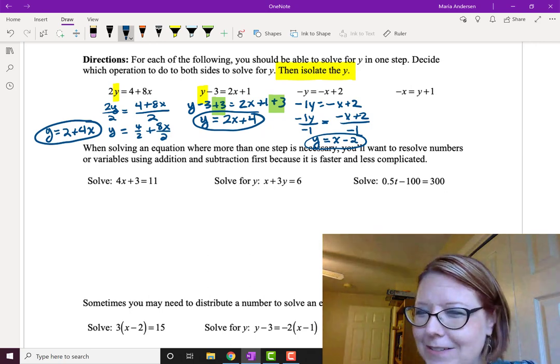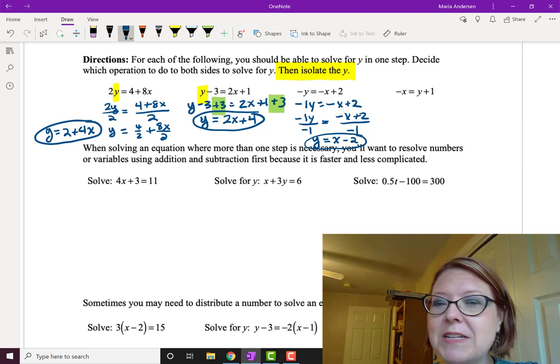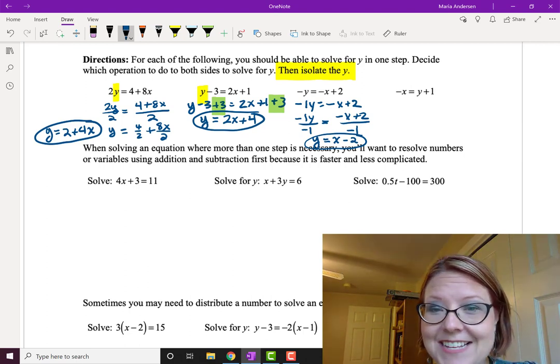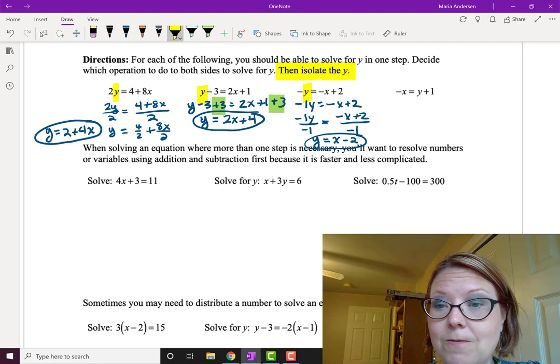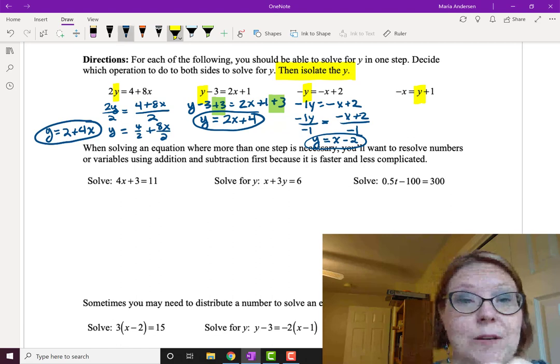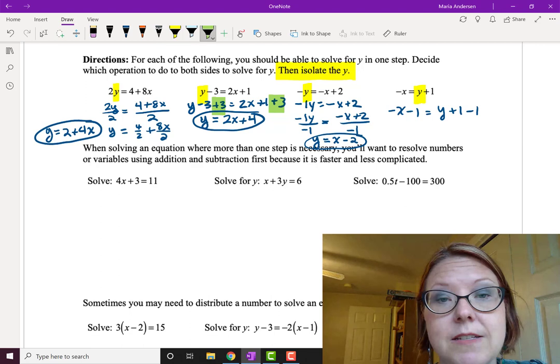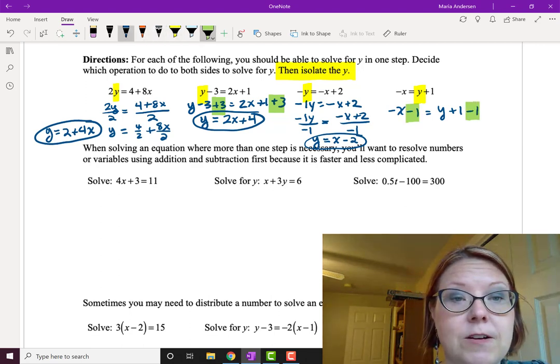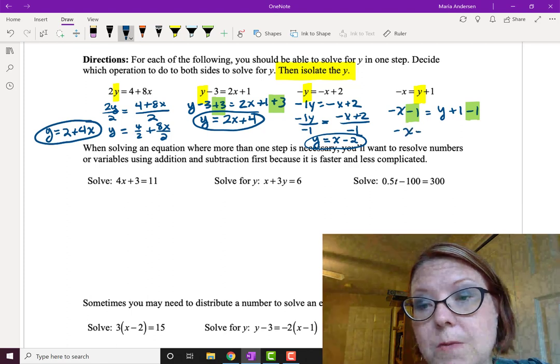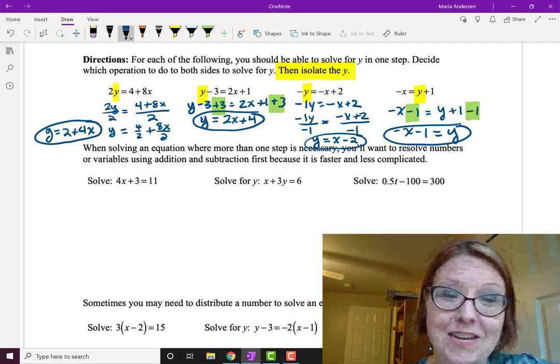If that last step felt a little fishy to you, go back and look at the first example. In the last example, negative x equals y plus 1. Remember what we're isolating for, we're isolating for the y. All we need to do is remove the plus 1, and we can do that by subtracting 1 on both sides. So negative x minus 1 equals y. Don't worry so much about the y being on the right side or the left side. The point is that we isolated it.